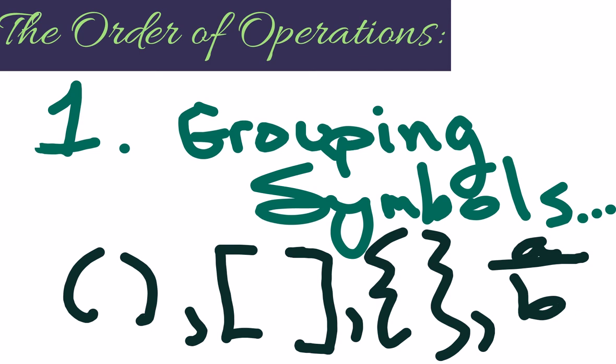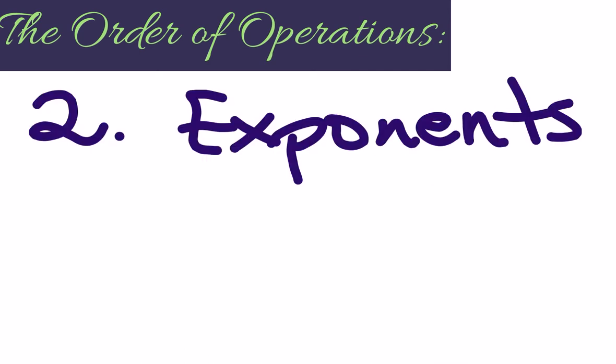You want to try to eliminate the groups. Now the next step would be exponents. Carry out your exponents. Just to remind you exactly exponents, what is it? Remember this, that exponents indicate repeated multiplication.